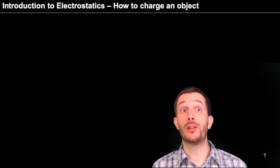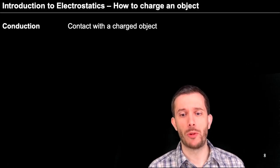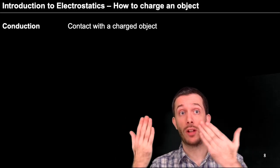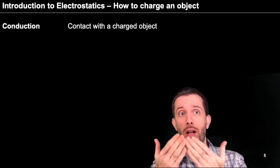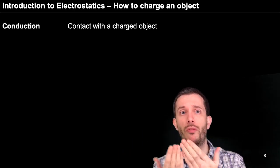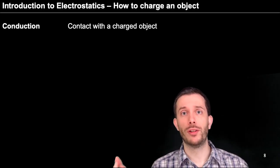So now how do we charge an object? There are three main ways to charge an object. Number one is conduction. You bring a charged object into contact with another one and some electrons simply jump from one onto the other. So we can charge something by contact.